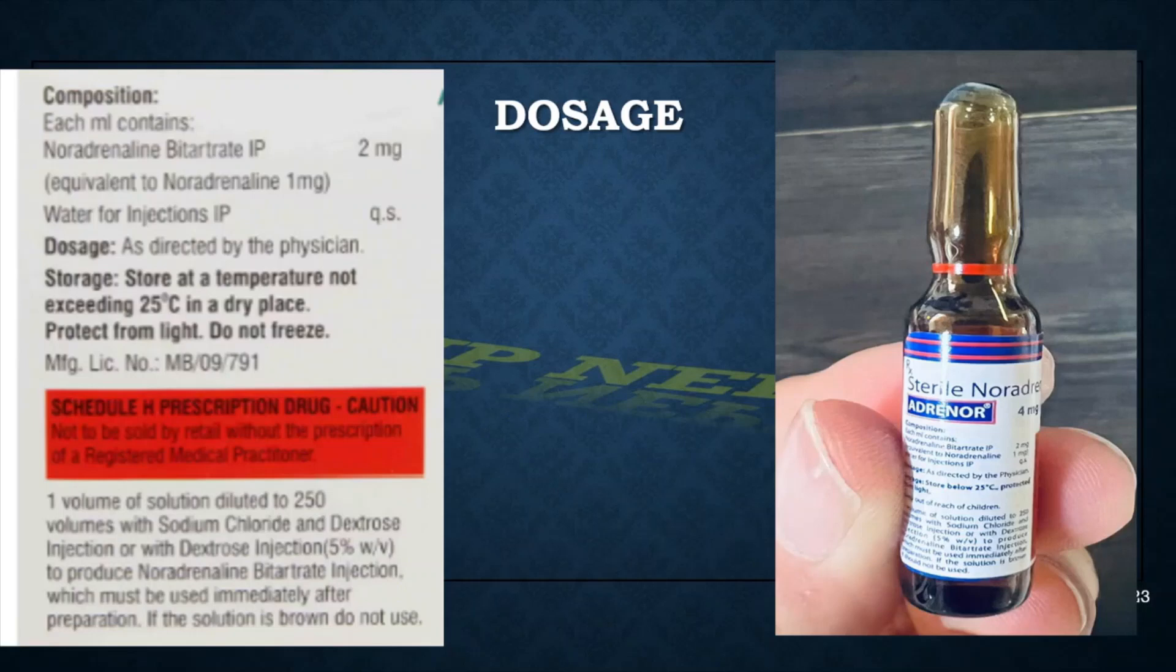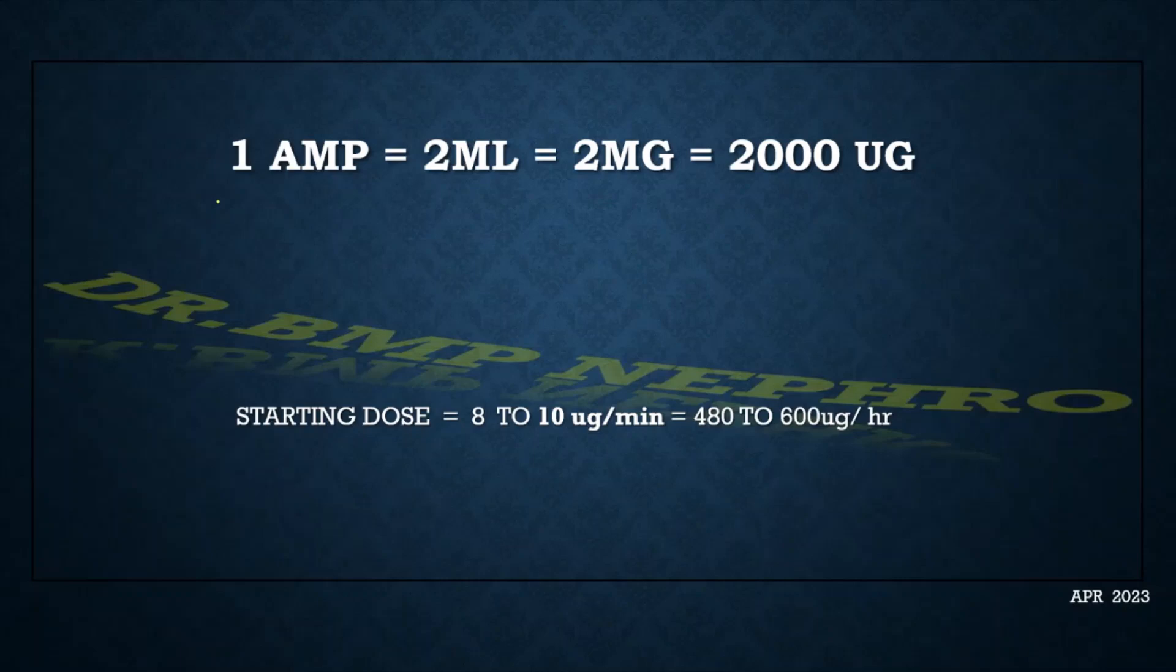Coming to the dosage, the vial comes in 2ml dosage. Each ml contains noradrenaline bitartrate which is 2mg. 1ml contains 2mg, so the vial available in 2ml, total dose is 4mg. Our dosage regimen is based on this one. One ampoule contains 2ml, each ml contains 2mg, so total is 4mg.